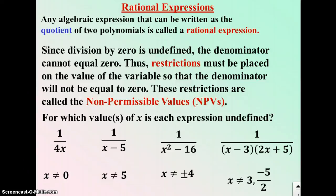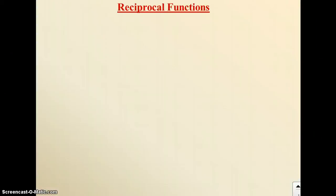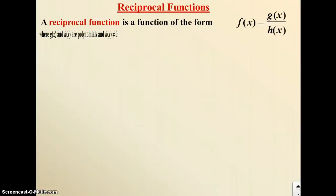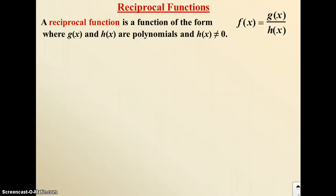Recall that from rational expressions — it is also very important when we talk about reciprocal functions. The definition of a reciprocal function: it's in the form f(x) equals g(x) over h(x), where g(x) and h(x) are polynomials. As soon as you have a polynomial in your denominator, that denominator can never equal zero, so we will have restrictions on our variables.